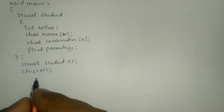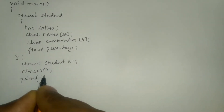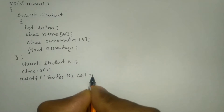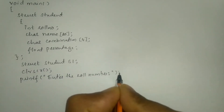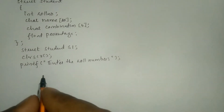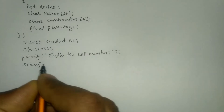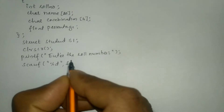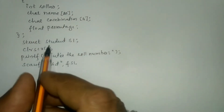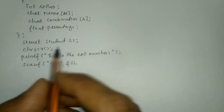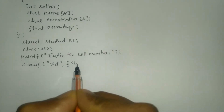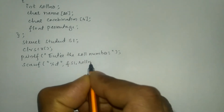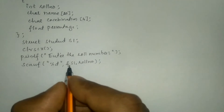Now we will ask the user to enter the roll number using the printf function, writing enter the roll number in double quotation marks and put semicolon. Now we are going to receive input from the user through the keyboard using scanf, writing %d in double quotation marks, comma ampersand s1 dot roll number. Whenever we want to access members of the structure definition we use the object with the dot member access operator and then the member name.